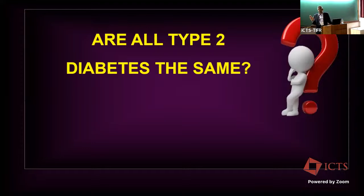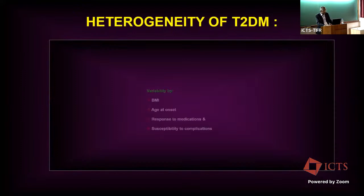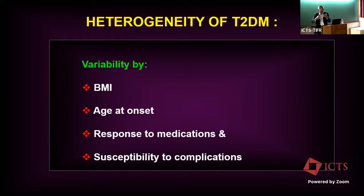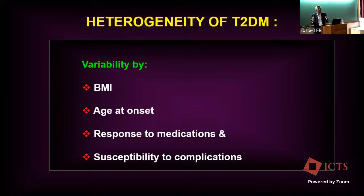Setting those aside, let us talk about type 2 diabetes. Everyone thinks it is simple — it is not. Look at just five variables. Body mass index can be very different: you can have a very thin person with type 2 diabetes and an extremely obese person with type 2 diabetes who are completely different metabolically.